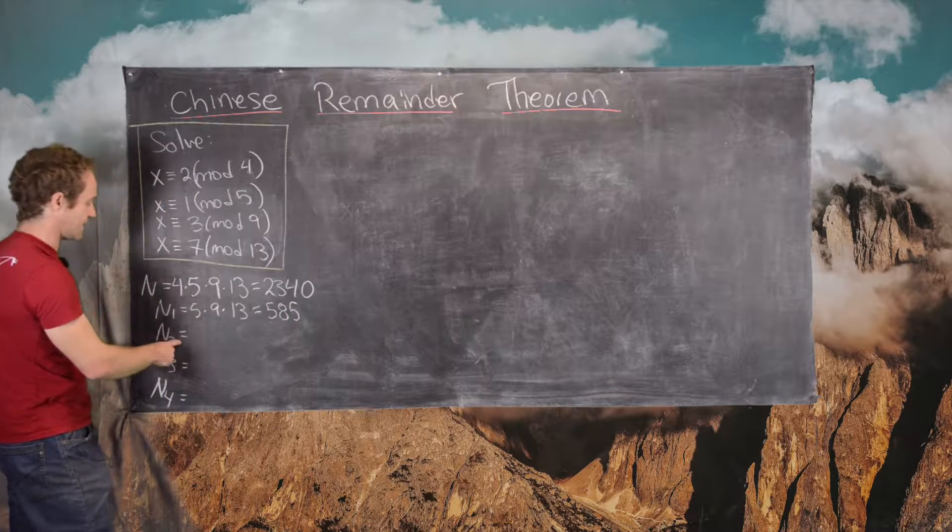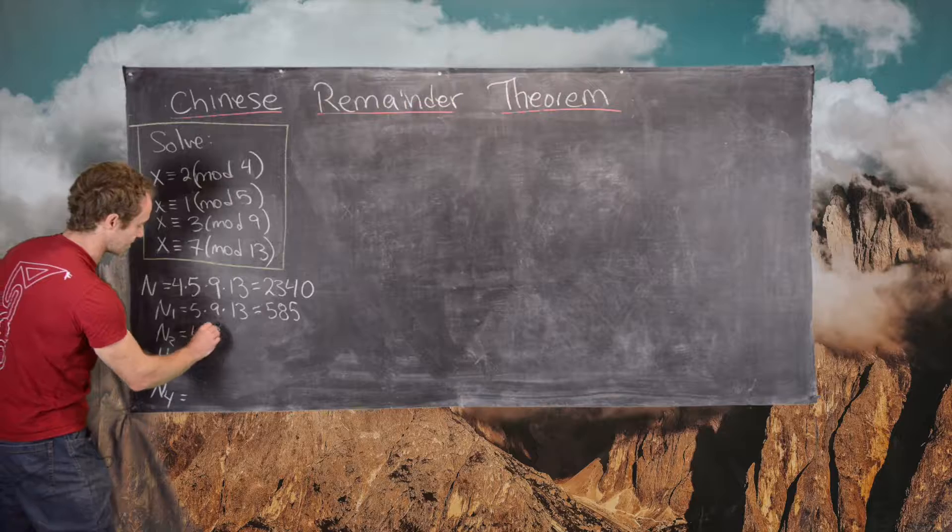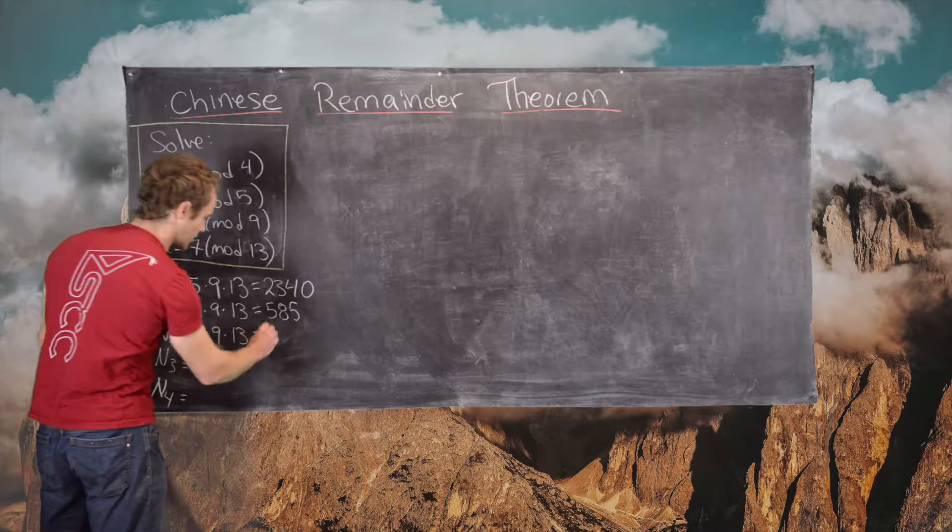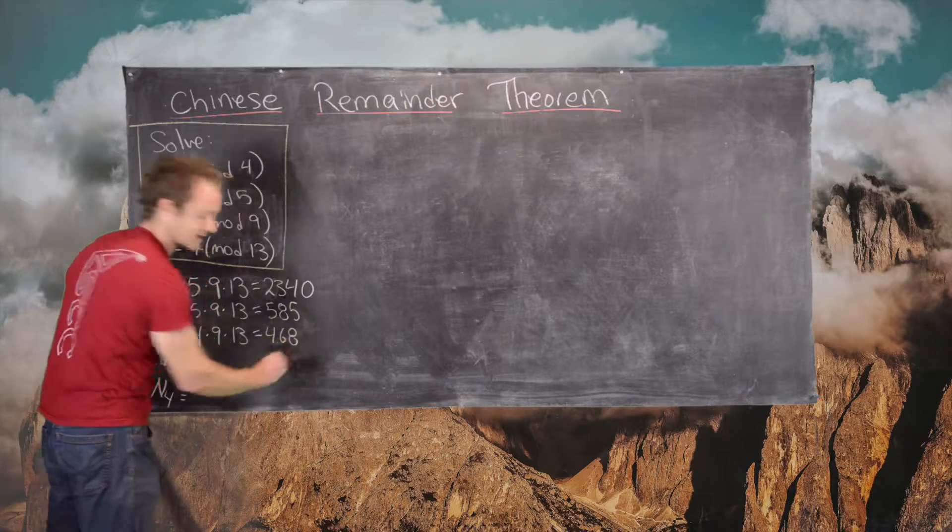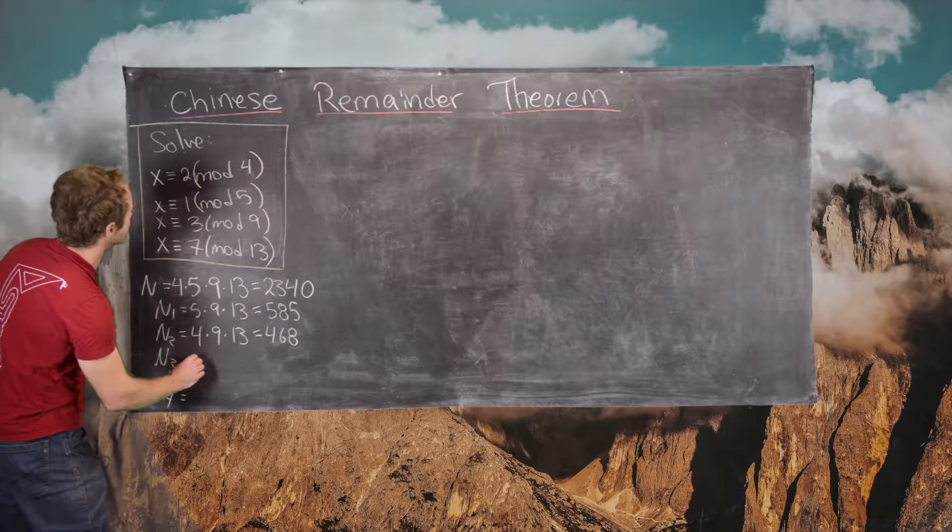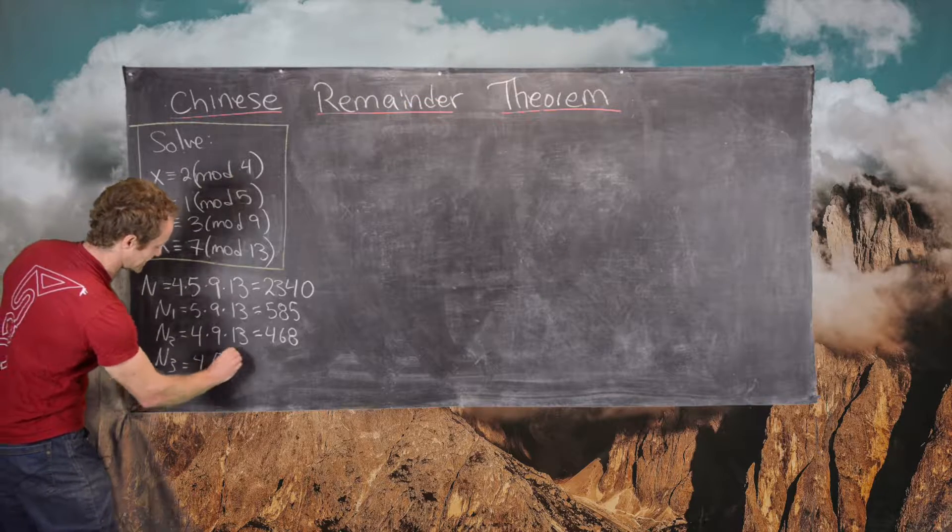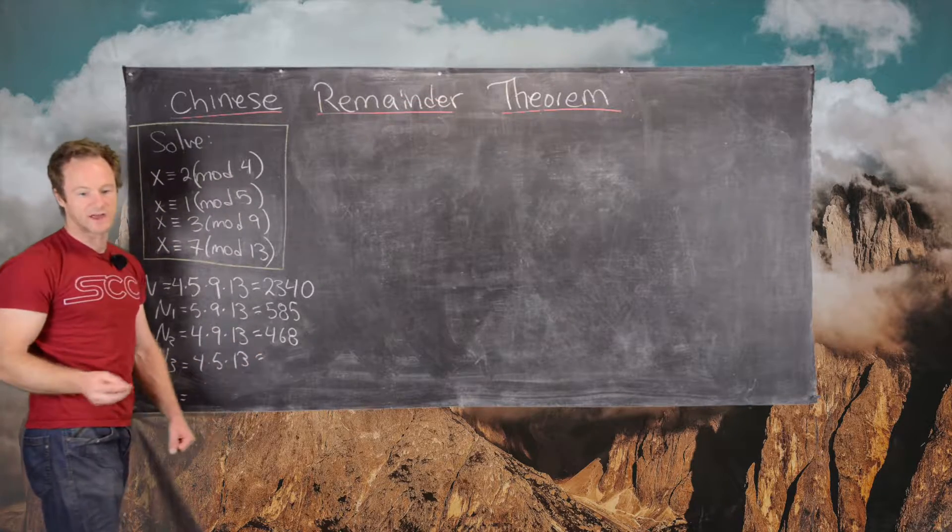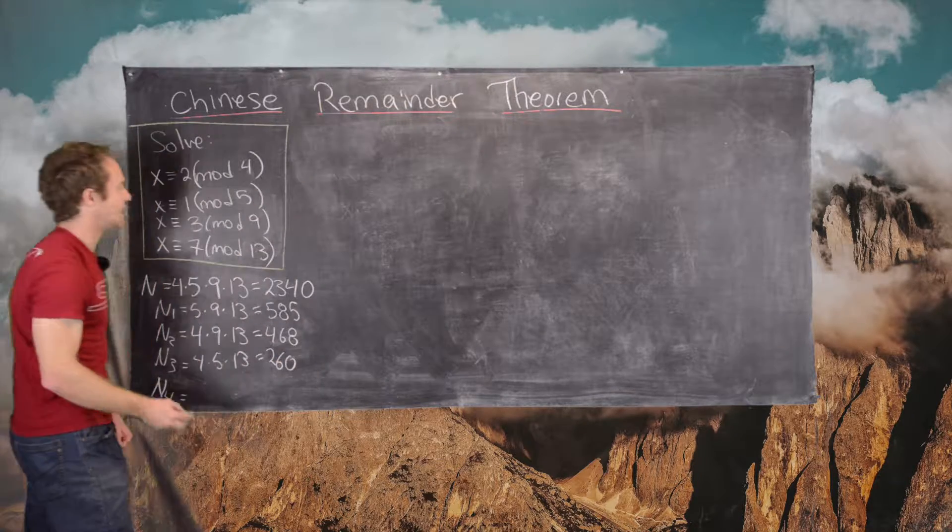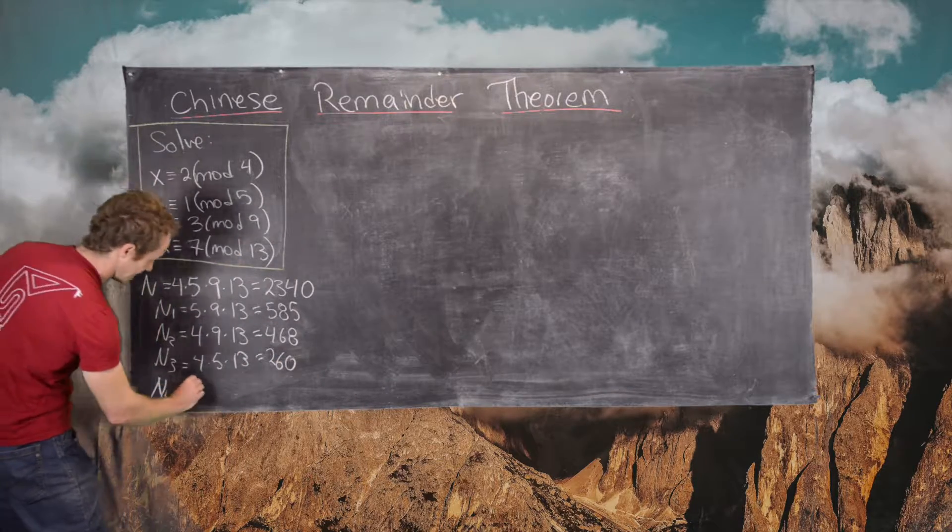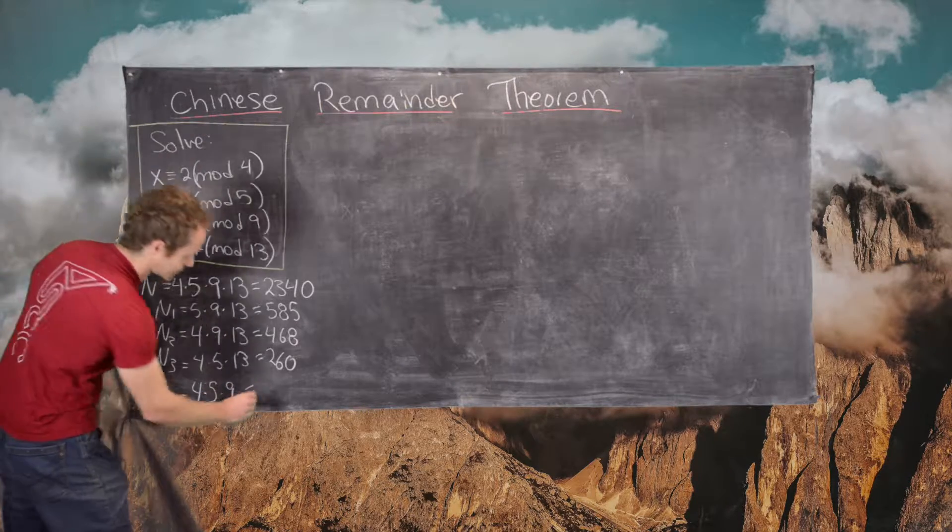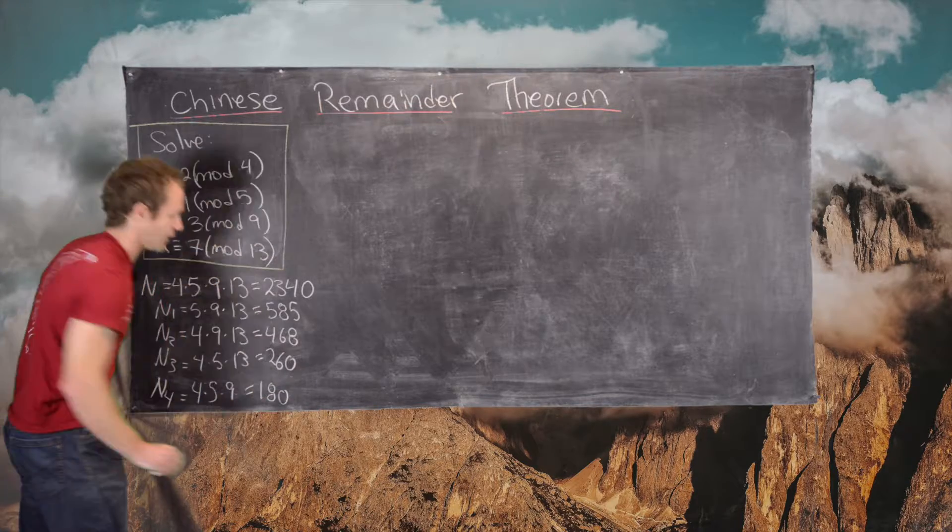The next one, N3, is 4 times 5 times 13, which equals 260. And then finally, N4 is 4 times 5 times 9, which equals 180. Okay, good.